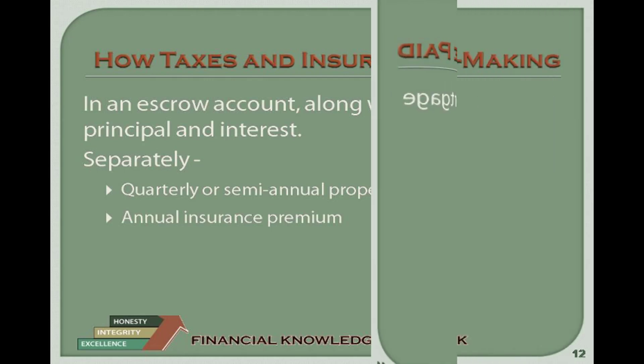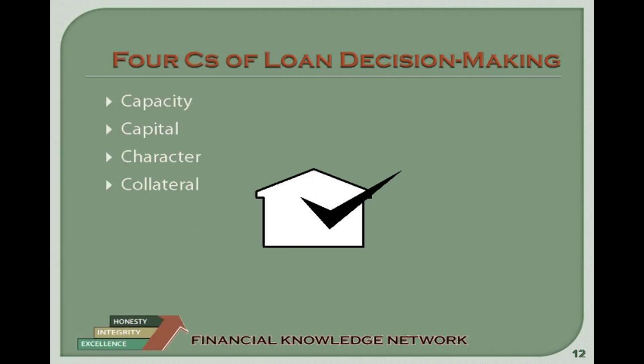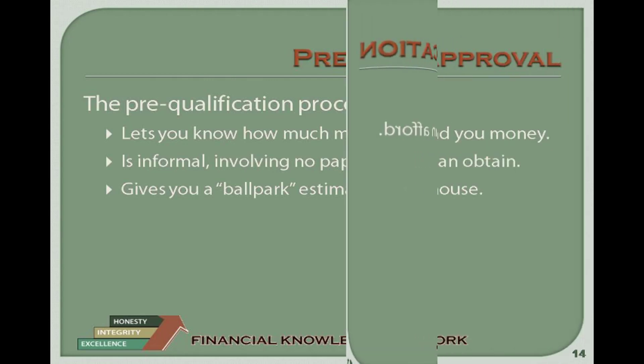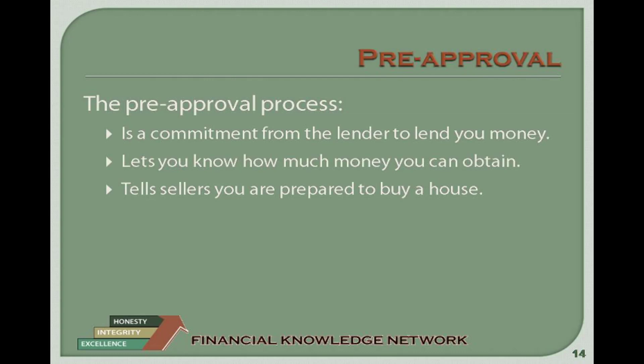Remember the four C's of decision making for lenders. Capacity: Do I have the ability to pay the payment on time? Capital: Do I have the capital to be properly vested in the collateral? Character: Do I have the payment history to justify the loan? And Collateral: Do I have the proper collateral? Pre-qualifying for a mortgage will greatly simplify the process of acquiring a home and take away the guesswork. By pre-qualifying, you will know how much house you can afford and get an idea of what type of houses you should be looking for. This is an informal process that will only give you a ballpark estimate — do not confuse this with pre-approval. Pre-approval is an actual commitment by the lender to lend you the money. It lets you know how much you are going to be able to borrow and will help you negotiate, as you can offer assurance to a seller that you are capable of completing the transaction.